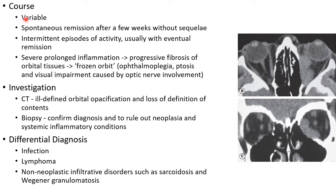There are three possible outcomes in the course of IOID. The first is spontaneous remission after a few weeks without sequelae. The second is intermittent episodes of activity, usually with eventual remission. The third is severe prolonged inflammation leading to progressive fibrosis of orbital tissues, eventually leading to frozen orbit. Features of frozen orbit include ophthalmoplegia, ptosis, and visual impairment caused by optic nerve involvement.